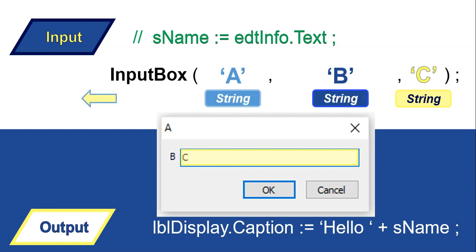Where does the returned value get sent? We want to store it somewhere. We need to keep track of what they typed in the edit part of the InputBox, and that will be of type string. Just like we had sName before, we're going to say sName is assigned the value of the InputBox. You don't just call the InputBox by itself — you need a variable assigned the value returned by it. It waits until the InputBox is completed, then continues with the rest of the code.